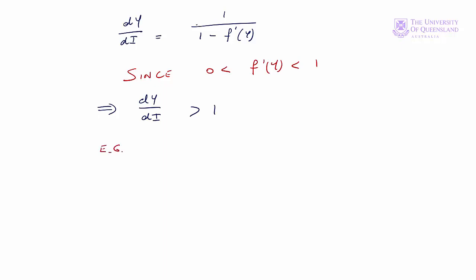For example, if f prime Y is equal to 0.75, dY/dI is equal to 1 over 1 minus 0.75, is equal to 1 over 0.25, is equal to 4. What that tells us is if investment increases by $1, then total income increases by $4.